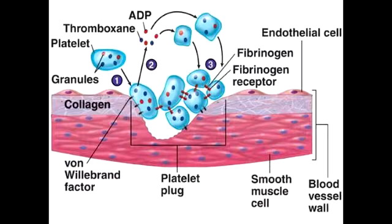ADP then binds to the ADP receptor, causing an expression of glycoprotein 2B and 3A at the platelet surface. Once the glycoprotein 2B and 3A receptors are expressed on the surface, fibrinogen will come and bind to this receptor. Other platelets can then recognize fibrinogen and attach their glycoprotein 2B and 3A receptors to it as well, resulting in platelet aggregation and formation of the platelet plug.